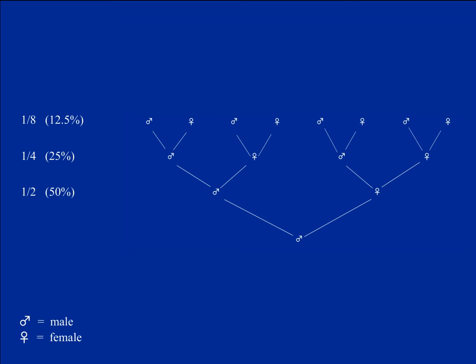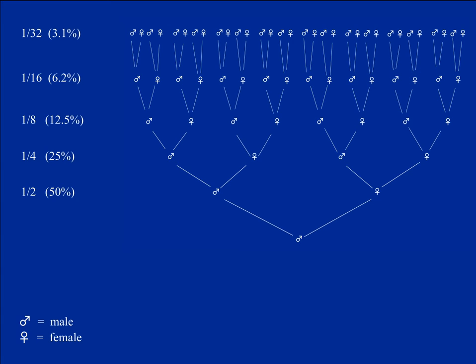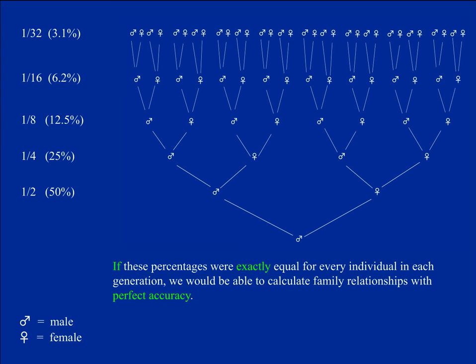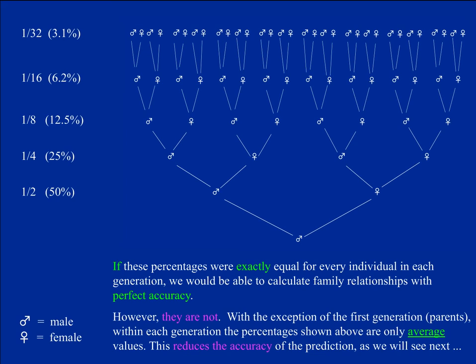On average, you share 12.5% with each great-grandparent, 6.2% with each great-great-grandparent (four generations back), and 3.1% with each great-great-great-grandparent (five generations back). If these percentages were exactly equal for each individual, we could calculate family relationships with perfect accuracy. However, with the exception of parents, the values within each generation are only averages, which reduces the accuracy of predictions.